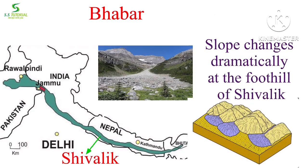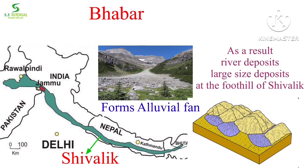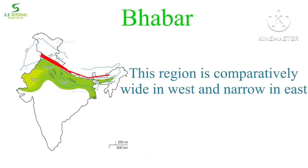At the foothills of the Siwalik, the slope of the terrain changes dramatically, and as a result the carrying capacity of the rivers decreases. Consequently, mostly large-sized sediments like gravel and pebbles are deposited by the rivers at the foothills of the Siwalik, forming alluvial fans. With the merger of these alluvial fans, the Bhabar region developed.